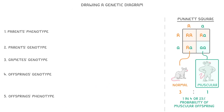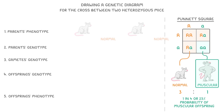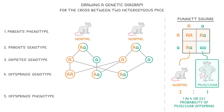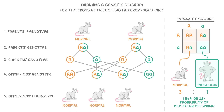Just to make sure everything is clear, let's quickly go through this example again but with a genetic diagram. We're still crossing two heterozygous mice, so we start with the five lines. Both parents have the normal phenotype but the big A, little a genotype, and so both of them will give one big A gamete and one little a gamete. When we mix them to get the offspring, we get one homozygous dominant, two that are heterozygous, and one that's homozygous recessive. So just like with the Punnett square, the phenotypes would be three normal and one muscular.